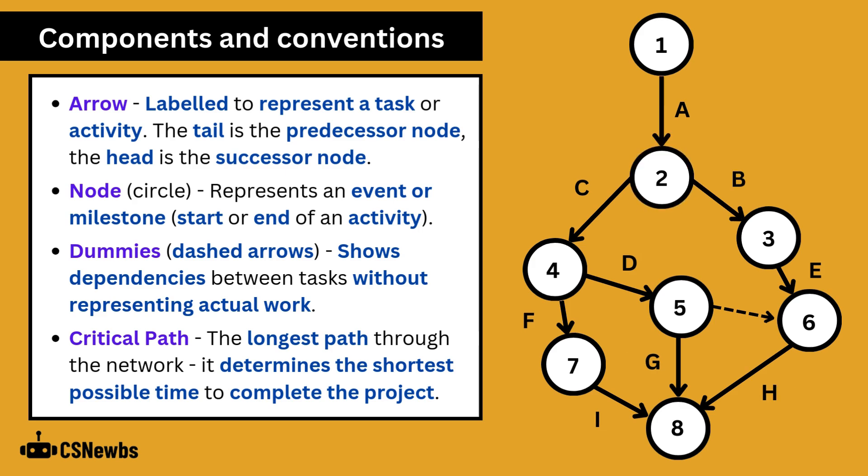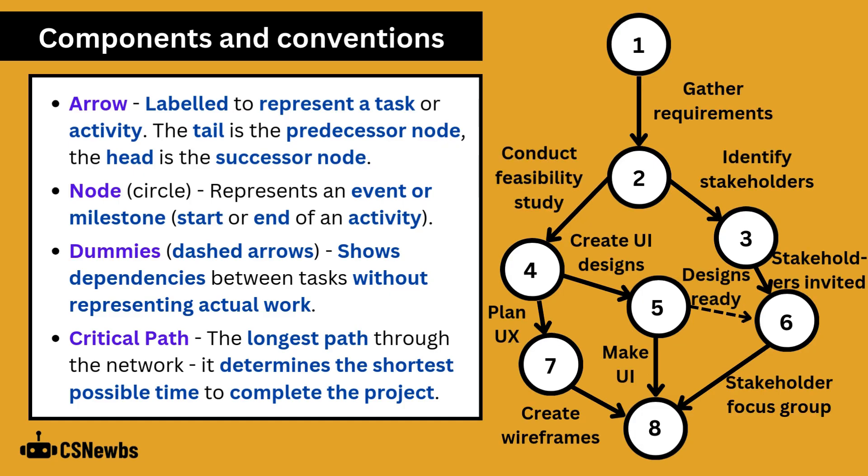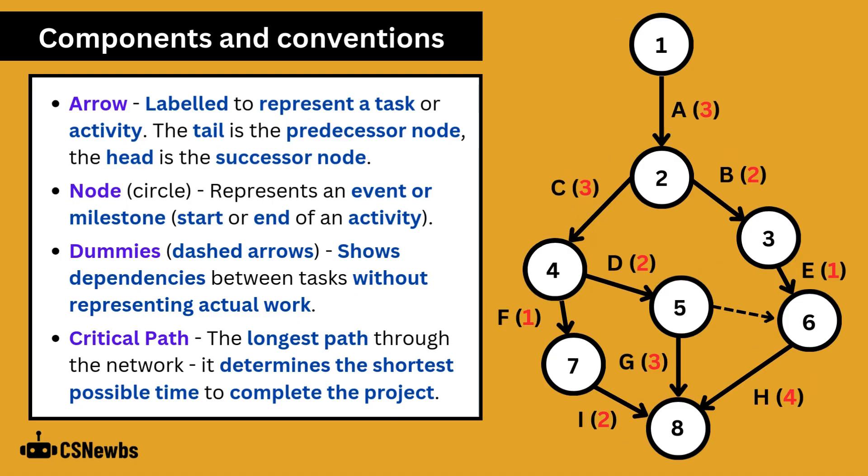Not all versions of arrow diagrams will have the duration. It may just say A, as here, or the arrows may be labelled with the actual activity, such as gather requirements, like here. If durations are included in the diagram it needs to be noted somewhere what they represent, such as three hours or three days or three weeks.